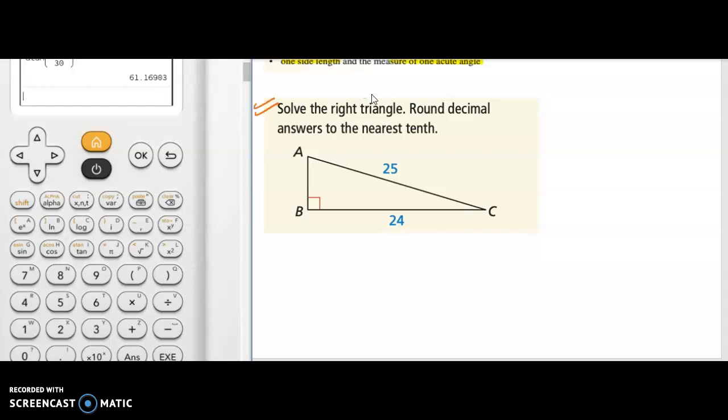Solve the right triangle. They are asking us to round the decimal. Okay. So two sides are given to you. I don't know AB. To find AB I can use the Pythagorean theorem. Pythagorean theorem says AC squared should be equal to AB squared plus BC squared. I don't know AB but AC is 25. I will write AB squared as it is plus 24 squared.